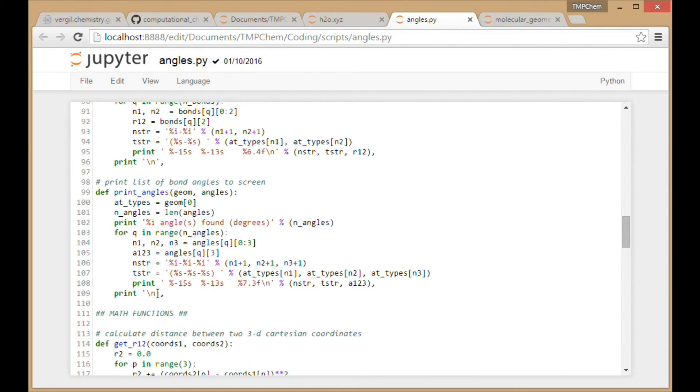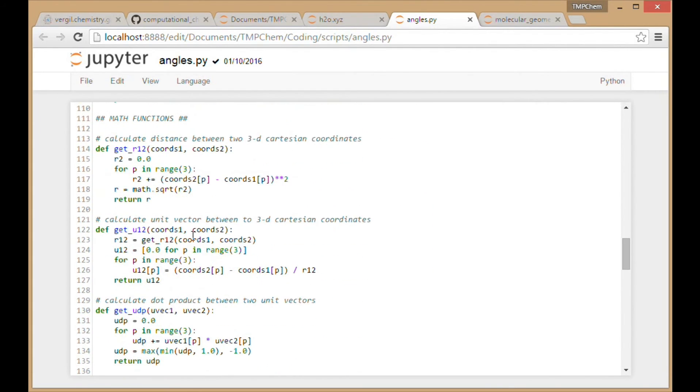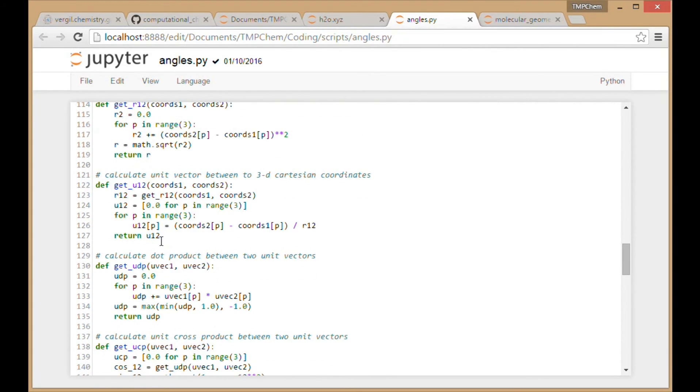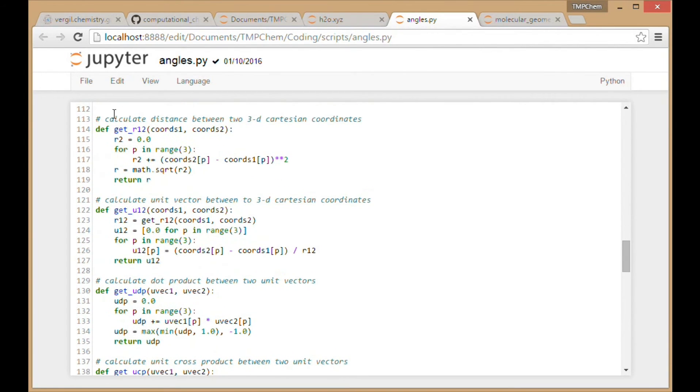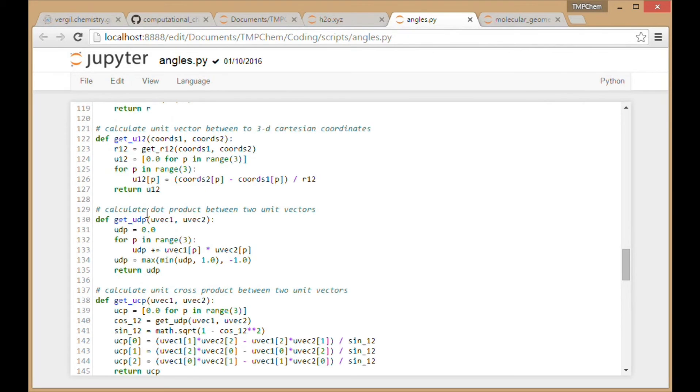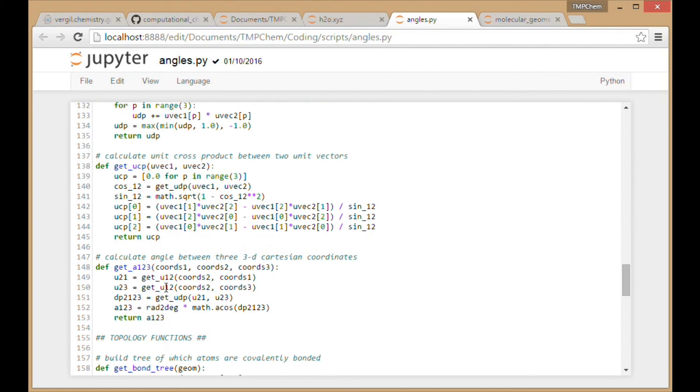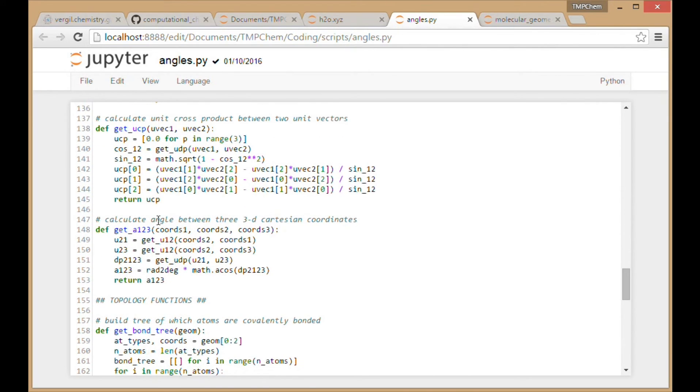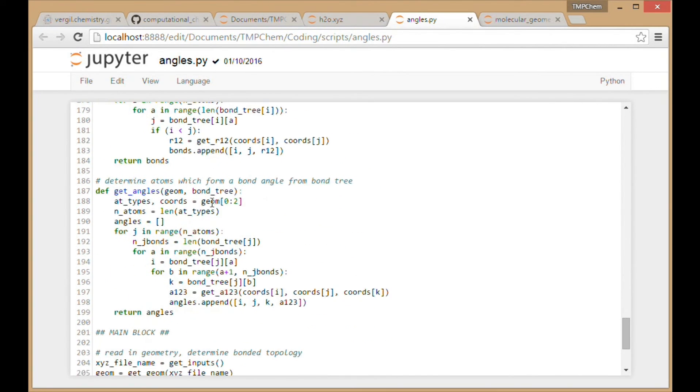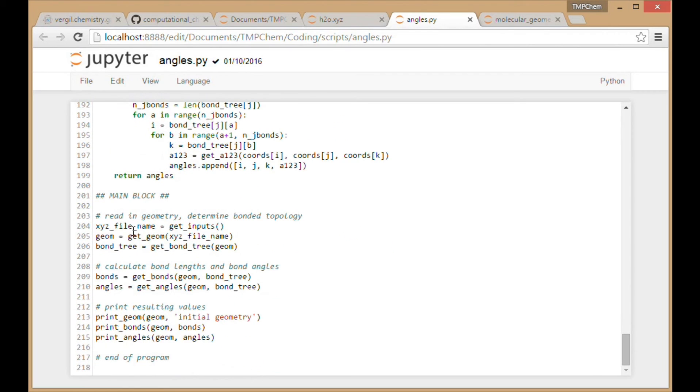I have a new function here which is going to print out all the angles that we find. Get r12. I have a new function for calculating the unit vector between two Cartesian coordinates. You calculate the vector and then divide by the bond length that you get from the get r12. I have a function for getting the dot product between two unit vectors. Angles. Get the angle between three sets of Cartesian coordinates. So that'll get those unit vectors, do the dot product and then do the arc cosine, that math dot acos. And then same functions, bond tree, bonds. And then given the bond tree, figuring out what the angles are. Those things where I had sets of IJ and JK both bonded to each other. That's what's in these nested four loops there. And then in my main block, it's the same stuff as before, but I'm including the angles and printing the angles as well.